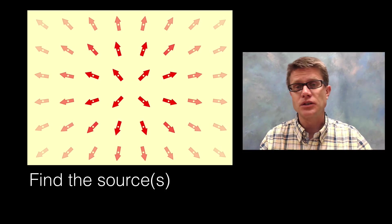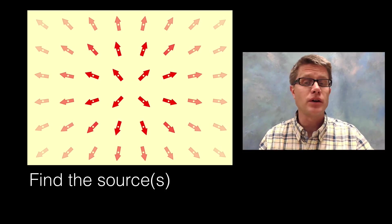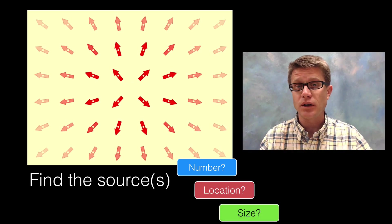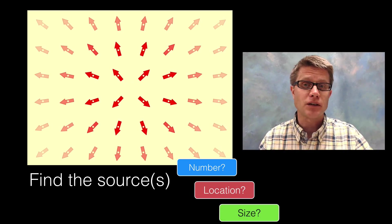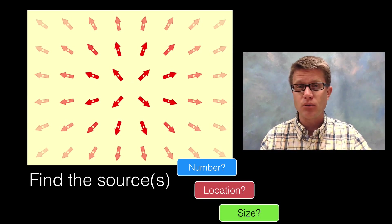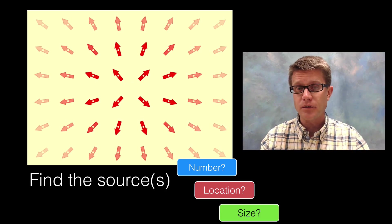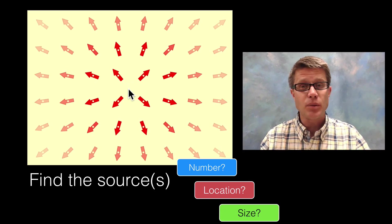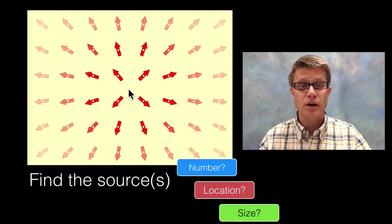Another thing you should be able to do is given a vector field, figure out where the source is. Figure out how many there are, what is its location and what is its relative size. Looking at this vector field right here you're looking for an area where all the arrows point away from that location or towards it. I would say there is one source located right here.